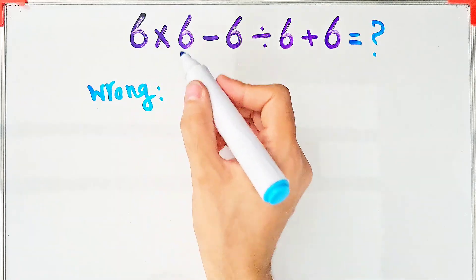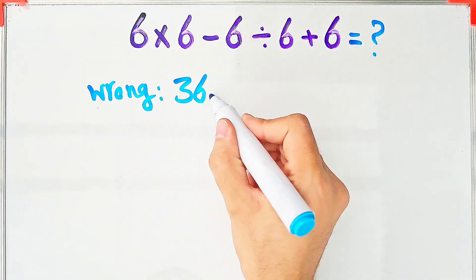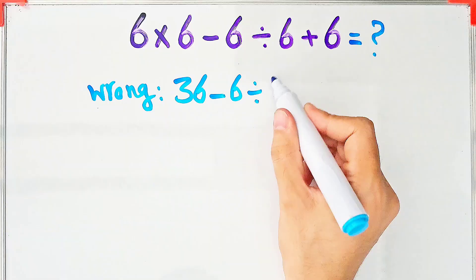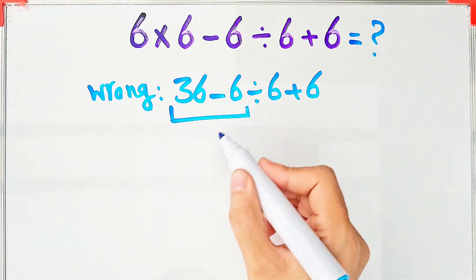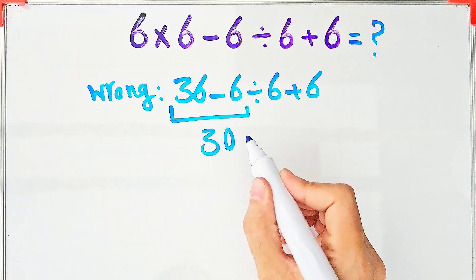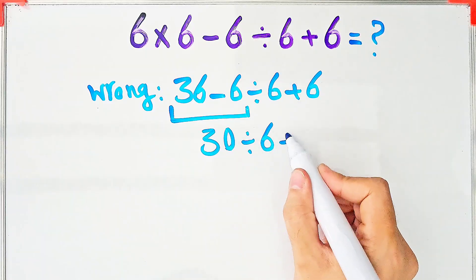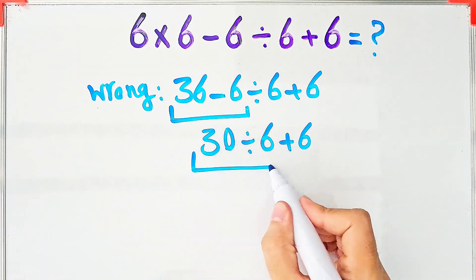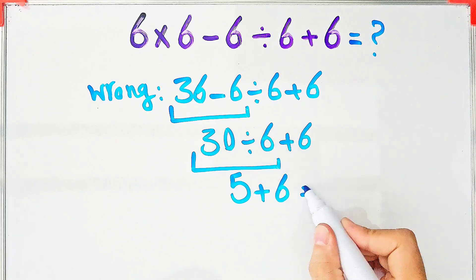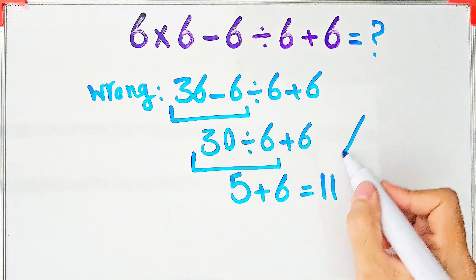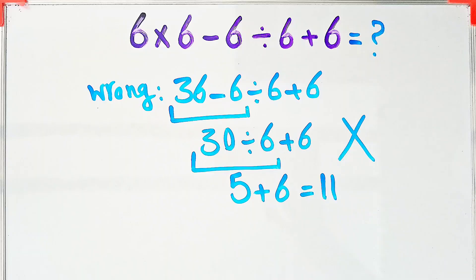6 times 6 equals 36, 36 minus 6 then divided by 6 then plus 6. 36 minus 6 equals 30, 30 divided by 6 then plus 6. 30 divided by 6 equals 5, plus 6 equals 11. But this answer is definitely wrong. Let's solve it step by step together.